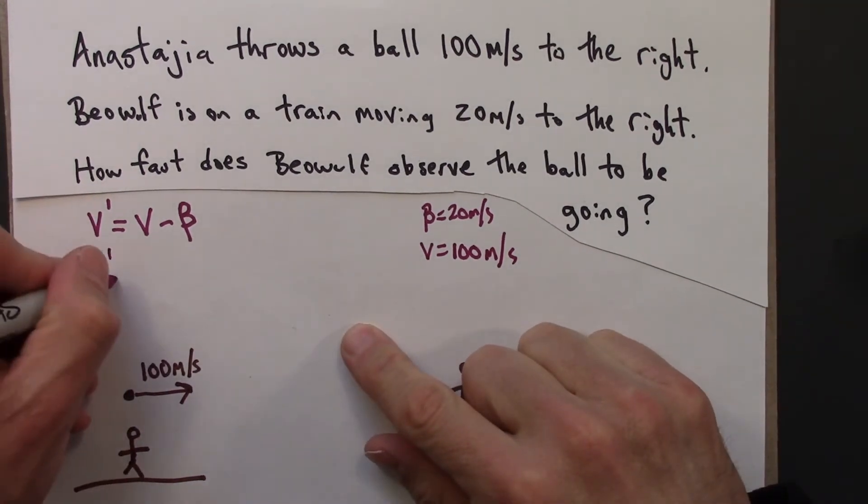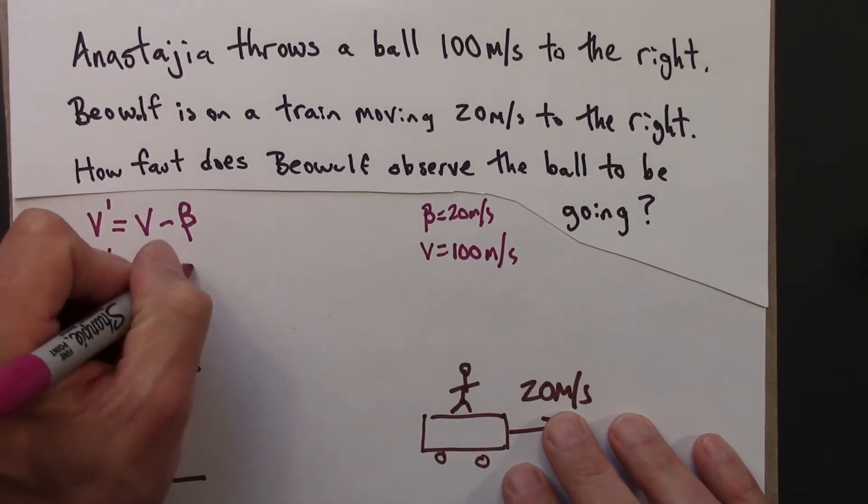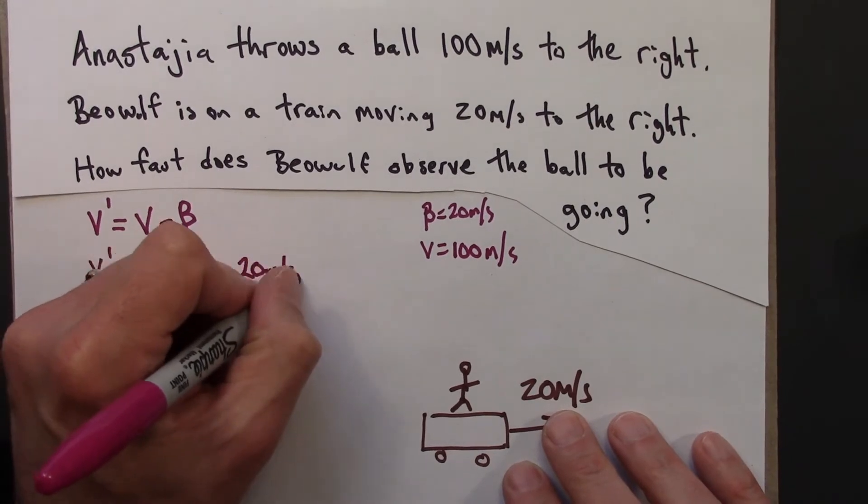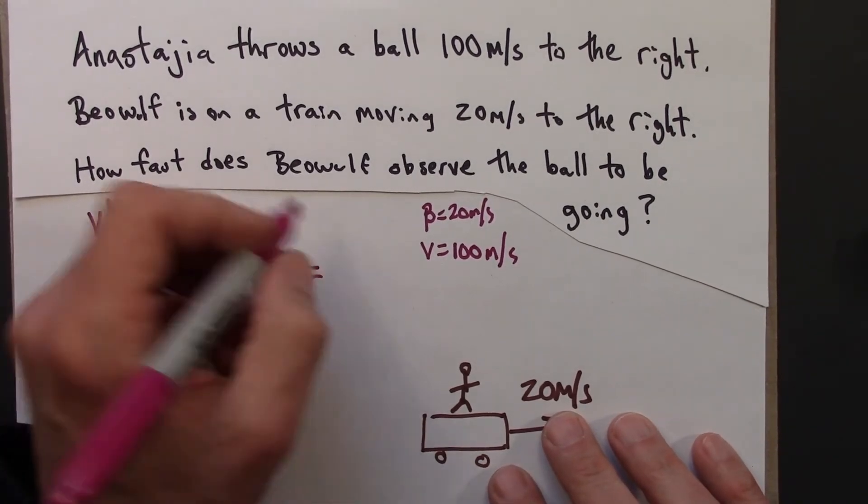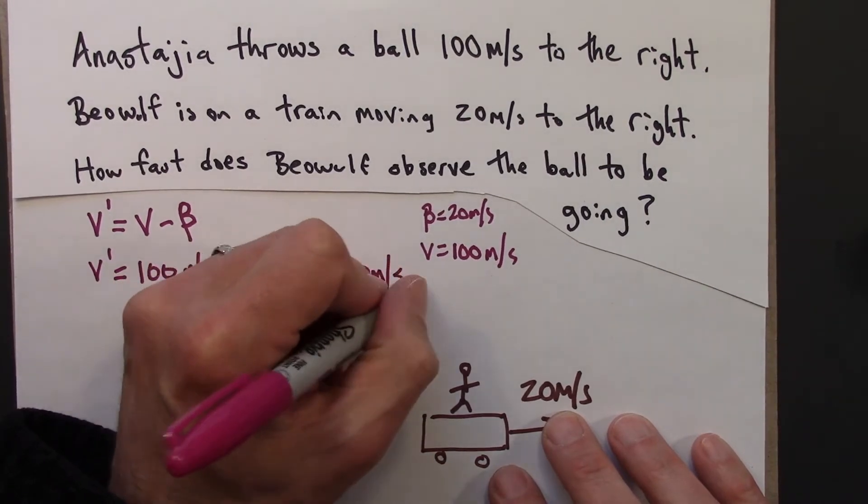V prime, that's the speed that Beowulf observes, 100 meters per second minus 20 meters per second, and that's 80 meters per second.